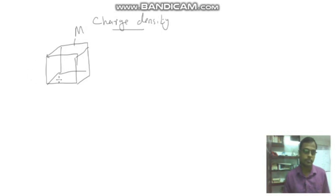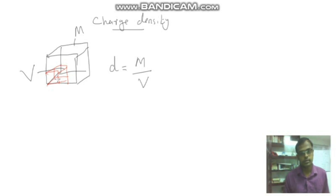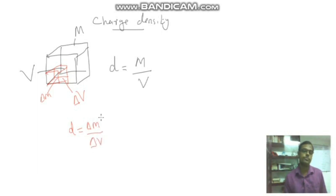Imagine one object having mass M and its volume is equal to V. How to write the density? Density D is equal to its total mass divided by volume. If you take a very small portion from this object and its mass is delta M and its volume is delta V, then the density D is equal to delta M divided by delta V. This is the volume density.